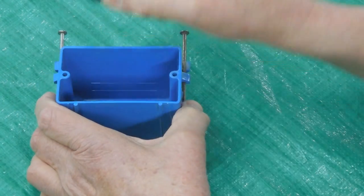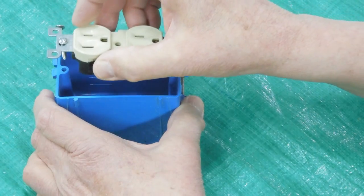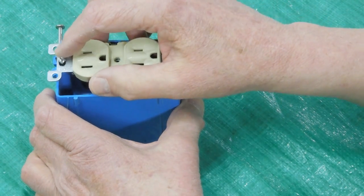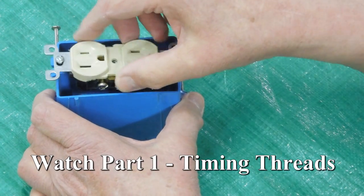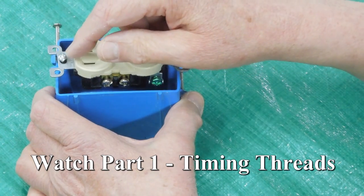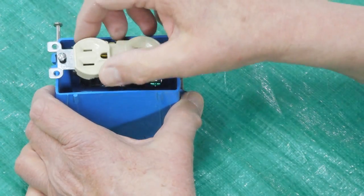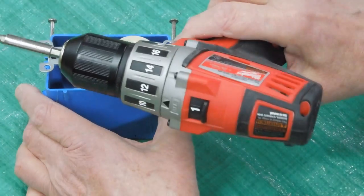Now when we take this out, and then we go to reinstall it, there's two things we've got to do. Time the threads, turn it backwards until it clicks, and then run it in slowly. This is too fast.